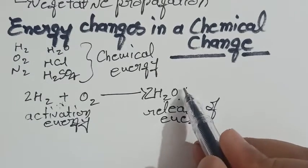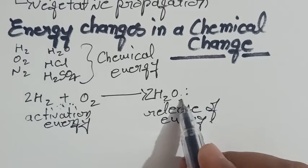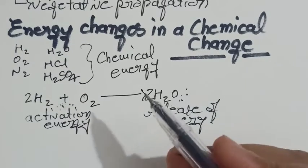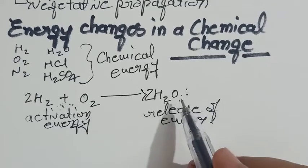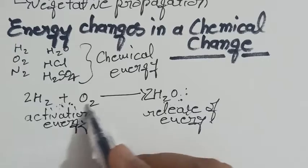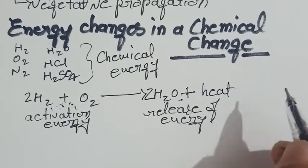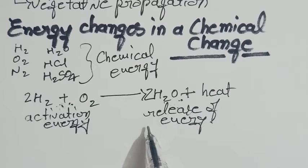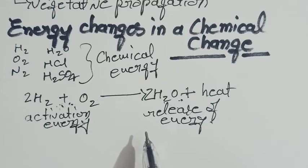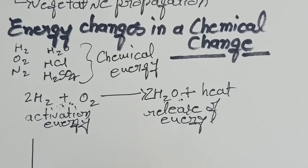If the products are having higher energy and the reactants are having lesser energy, then this reaction requires more energy from the external environment. Whereas if the reactants are having higher energy and products are having less energy, that higher amount will be released out in the form of heat, light, or sound. The energy released or absorbed is measured in terms of kilocalories or kilojoules, and on the basis of this, a reaction could be exothermic or endothermic.